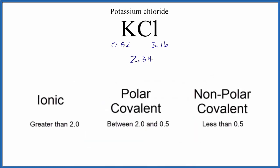That's greater than 2. Note that some textbooks state when it's greater than 1.7, it's ionic. Either way, KCl is an ionic compound.